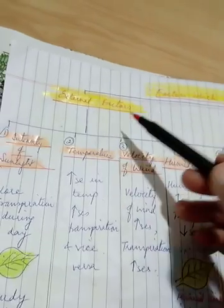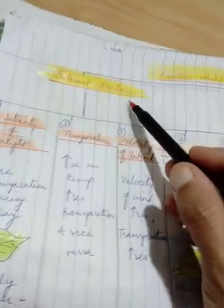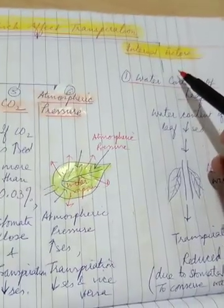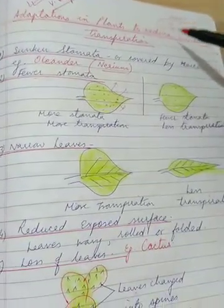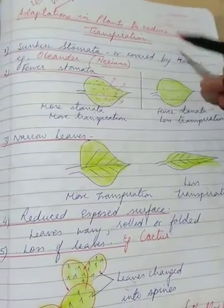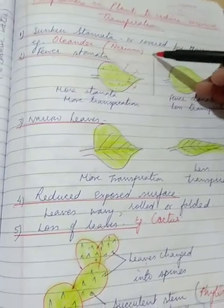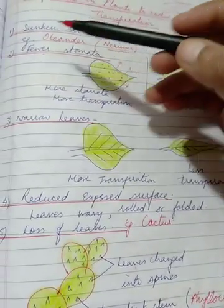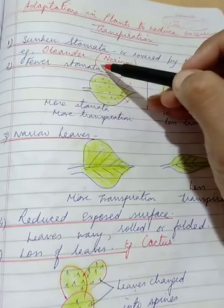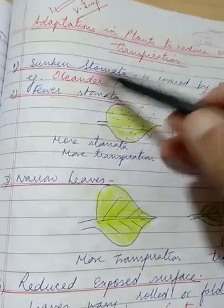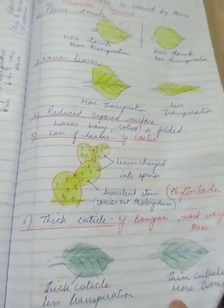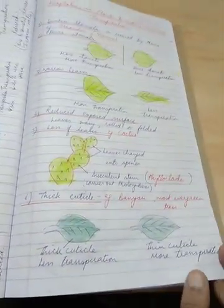Then we had studied the factors which affect transpiration. We discussed them under two broad headings: external factors and internal factors. Then we discussed adaptations in plants to reduce excessive transpiration, where the most important structure we had studied was Nerium or oleander leaf with sunken stomata and stomatal hairs.